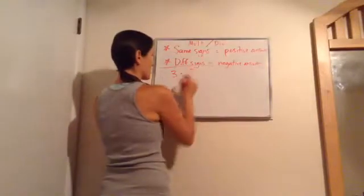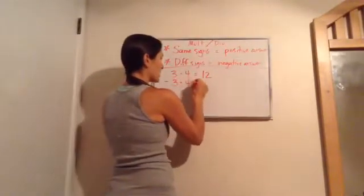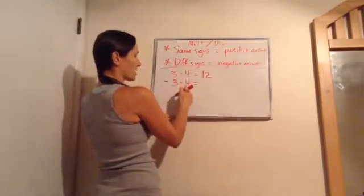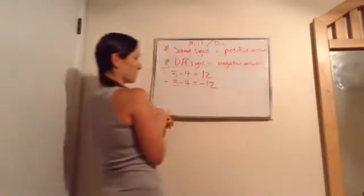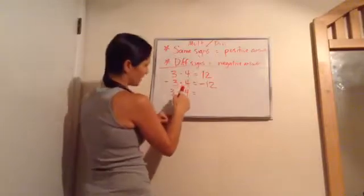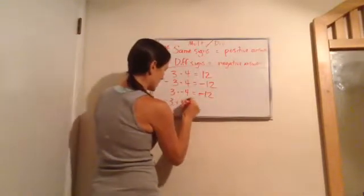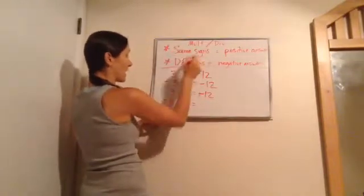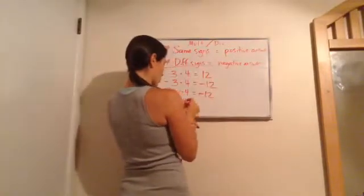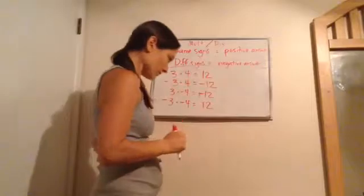Let's walk through some of them. For example, let's do positive 3 times positive 4. Same signs — it's going to give a positive answer. 3 times 4 is 12. But what if I have negative 3 times positive 4? I have different signs, negative and positive, so my answer is going to be negative 12. What about positive 3 and negative 4? Again, positive and negative are different signs, so I'm going to get a negative answer — negative 12. But what about negative 3 times negative 4? They're still the same sign, even though they're both negative, and it's going to result in a positive answer. 3 times 4 is 12, and because we have the same signs, we're going to get a positive answer.